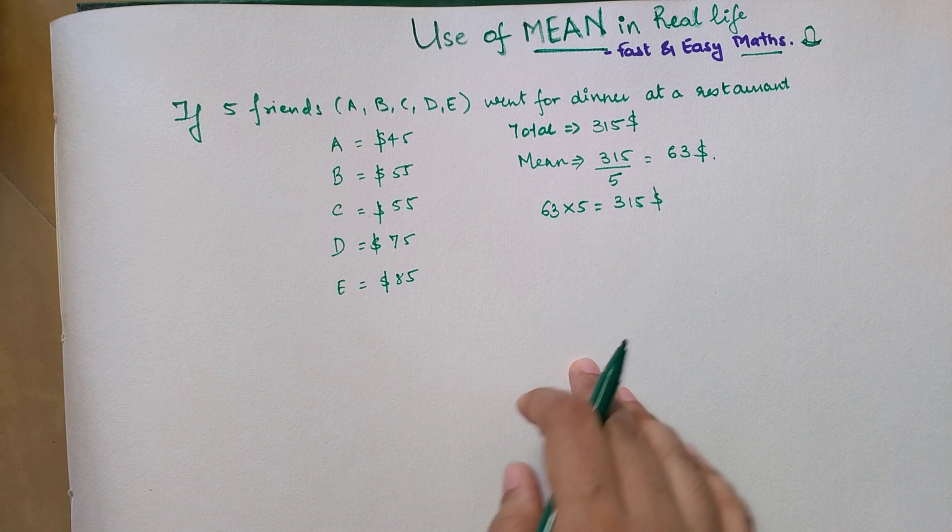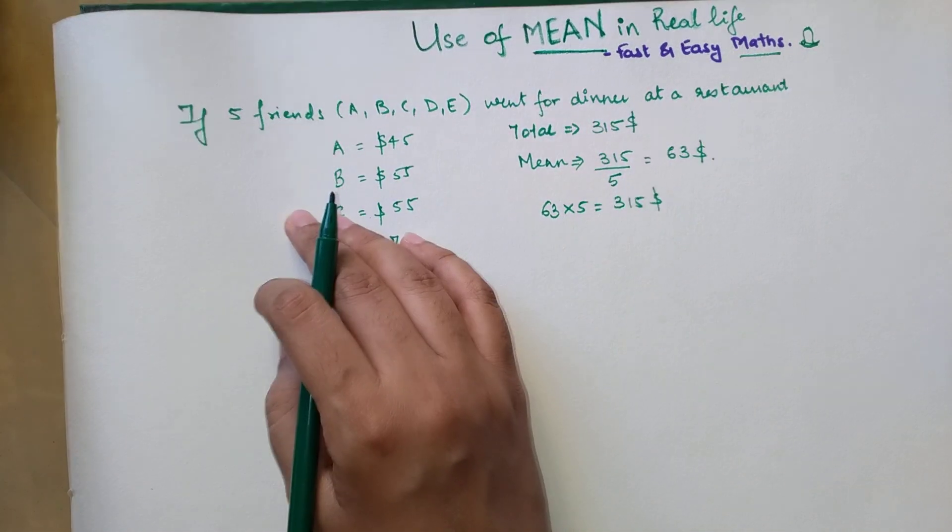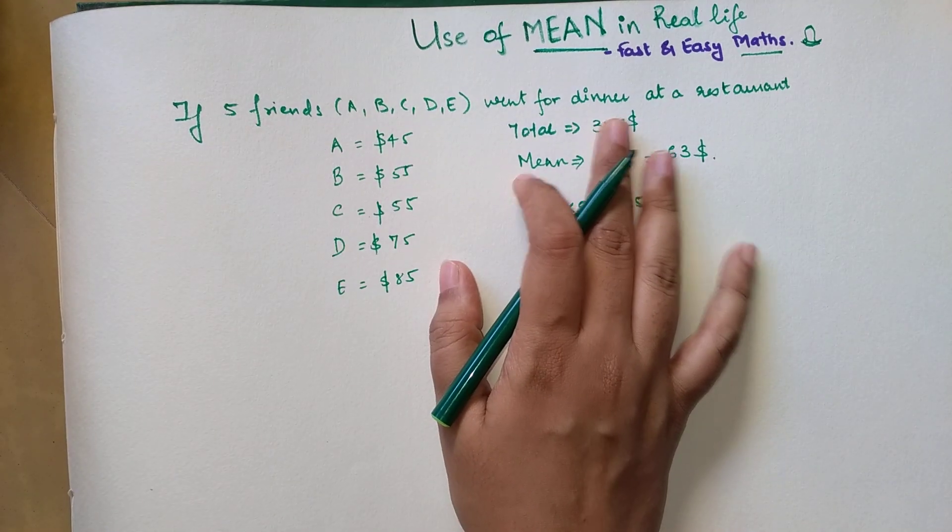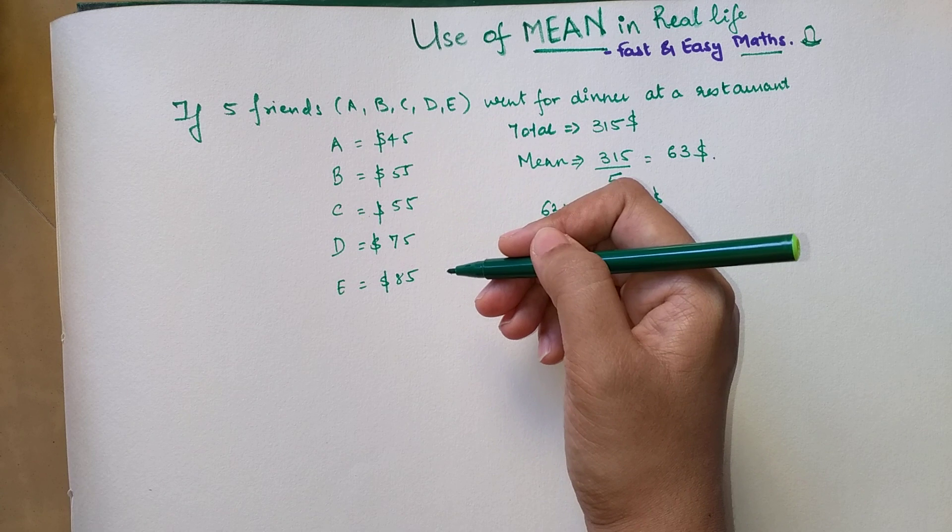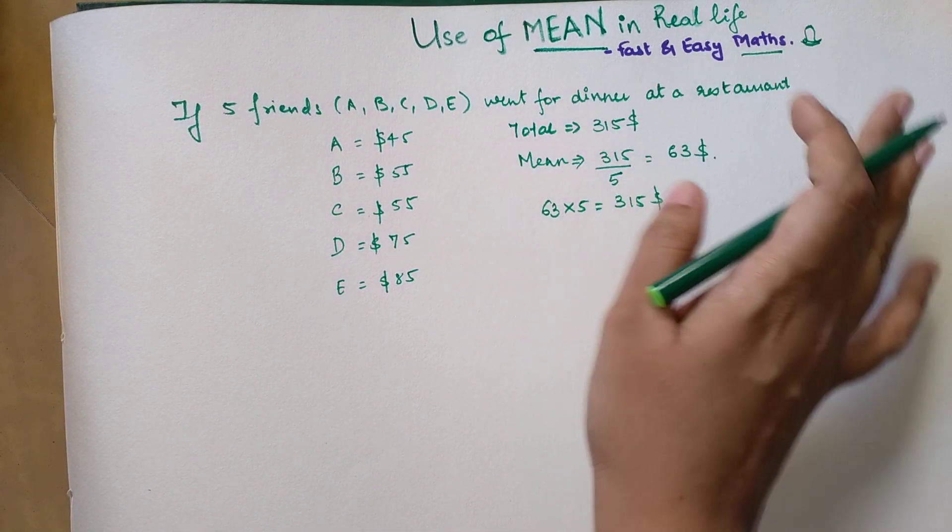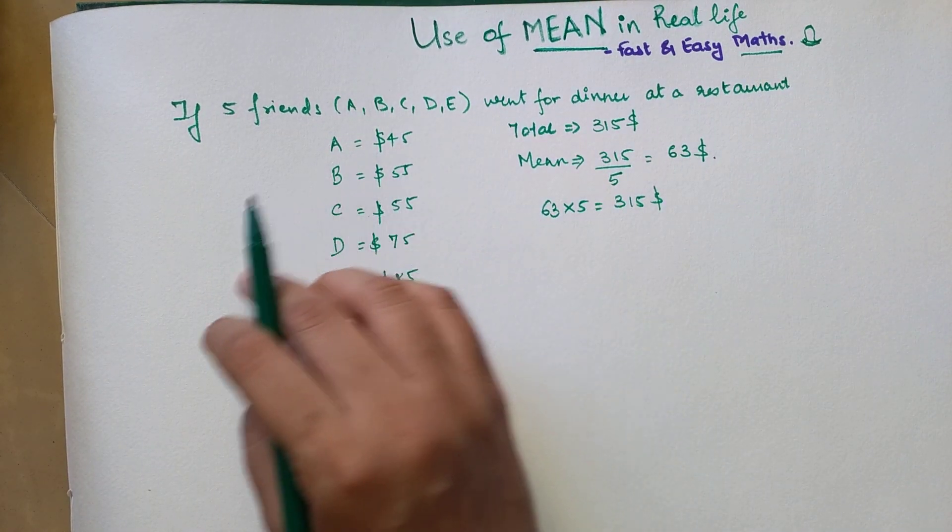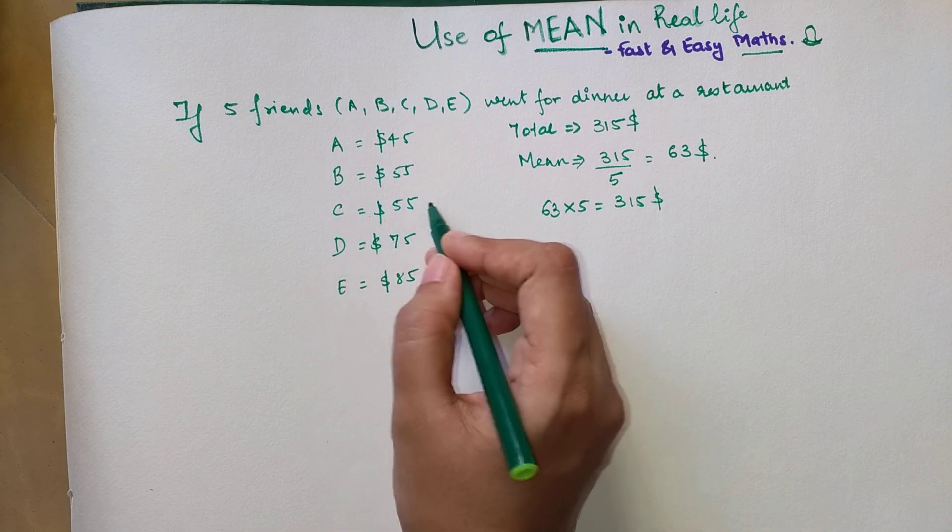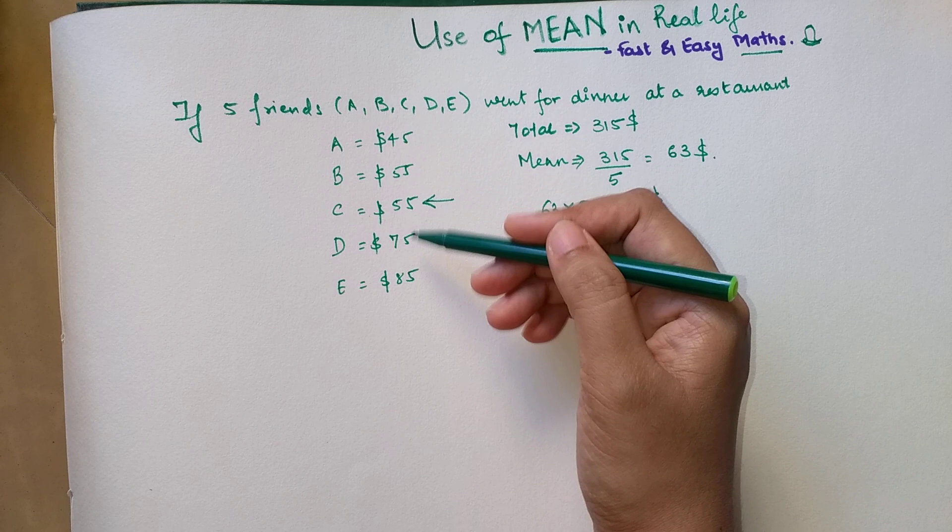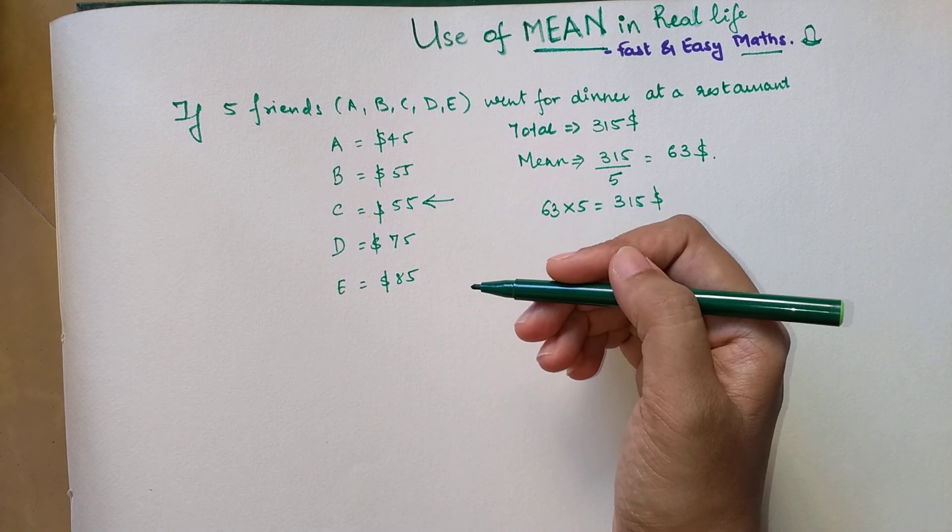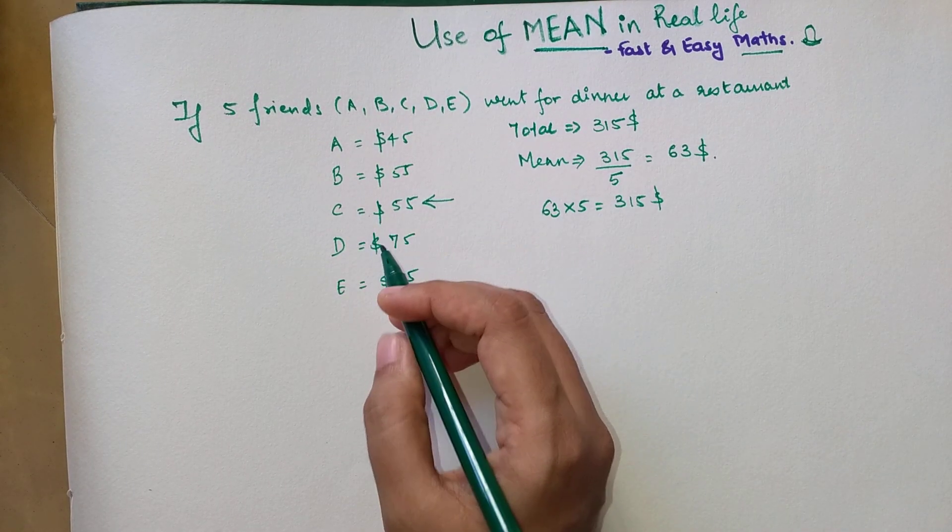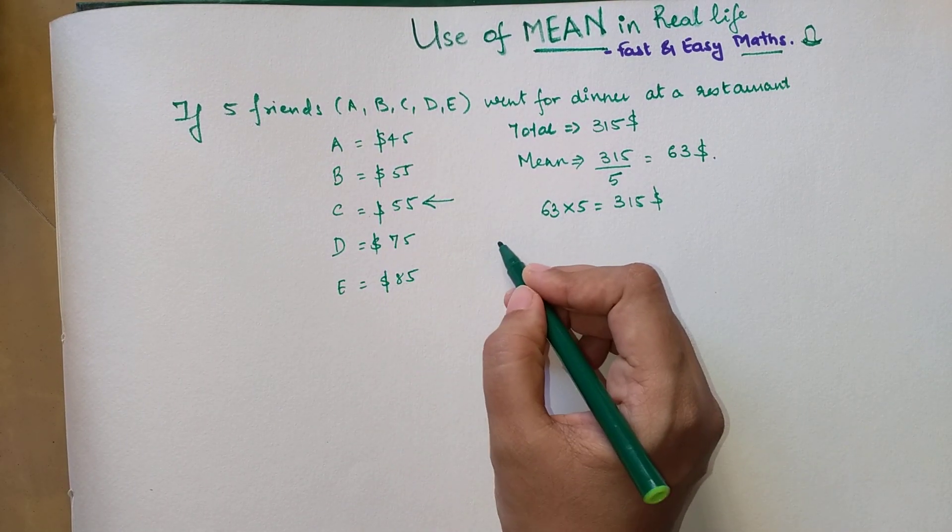But now let's see if instead of mean, they had thought of calculating the median. What is the median? Median is nothing but arranging all these numbers in ascending order, which luckily all these amounts are already arranged in. What is your median? Median is the midpoint. So here can I say C comes as the midpoint, because we have two values on top and two values below it.